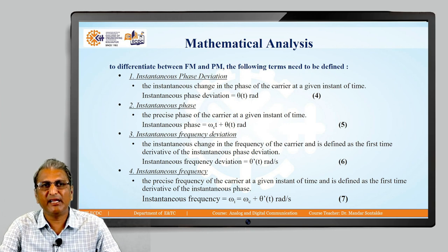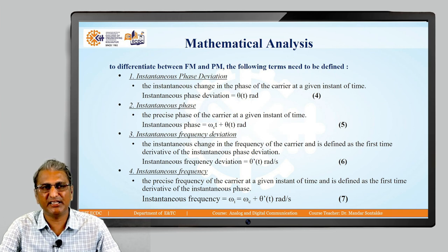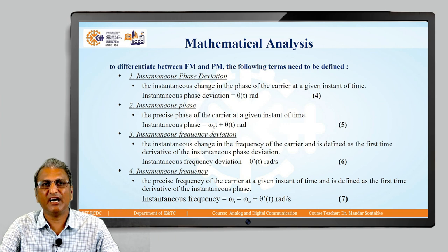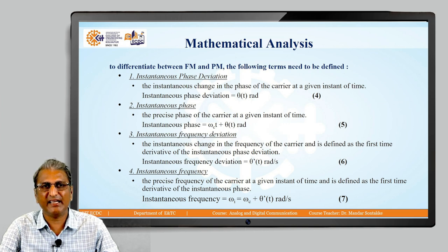There are 4 different definitions related to FM. The first one is called instantaneous phase deviation — it is the instantaneous change in the phase of the carrier at a given instant of time. It is denoted by theta(t) and the unit is radian. This is equation number 4. The second is instantaneous phase — the precise phase of the carrier at a given instant of time. It is given by omega_c*t plus theta(t), also in radian. This is equation number 5.